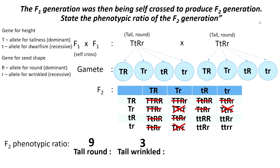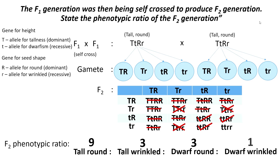Next, look at the next unmarked box — it's dwarf and round. Based on the Punnett square, there are 3 individuals who are dwarf and round. Lastly, this individual has a dwarf and wrinkled phenotype, so there is only 1. Therefore, we have the phenotypic ratio of 9 to 3 to 3 to 1.